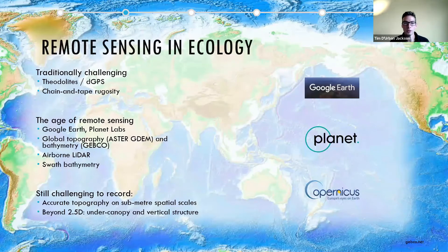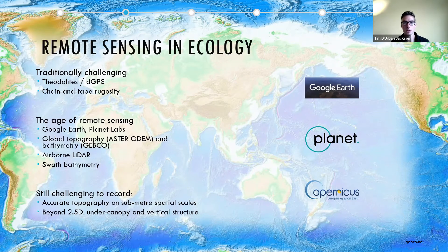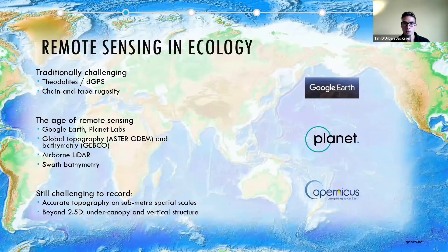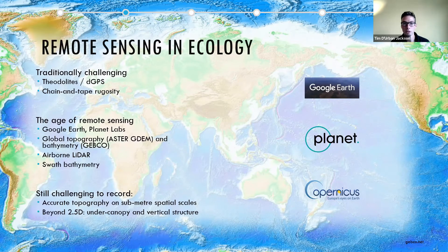Traditionally, capturing this 3D information has been quite challenging. There have been ways to capture accurate point measurements of elevation for many years — theodolites and more recently GPS can be used for point elevation measurements, and chain and tape rugosity measurements can be used to capture structural complexity in habitats, particularly widely used in coral reef studies. These techniques offer limited spatial extent and you have to conduct a lot of measurements to build up a detailed representation of the ecosystem.